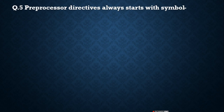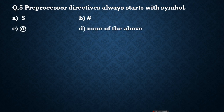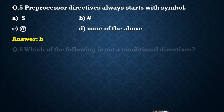Next question: Pre-processor directives always start with which symbol? Which symbol do we use to declare pre-processor directives? We use the hash symbol — for example, #define, #include, #if, #else. So the answer is B, the hash symbol.